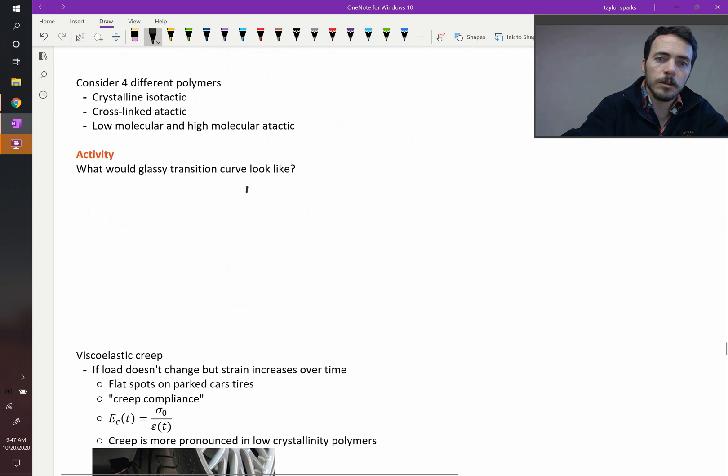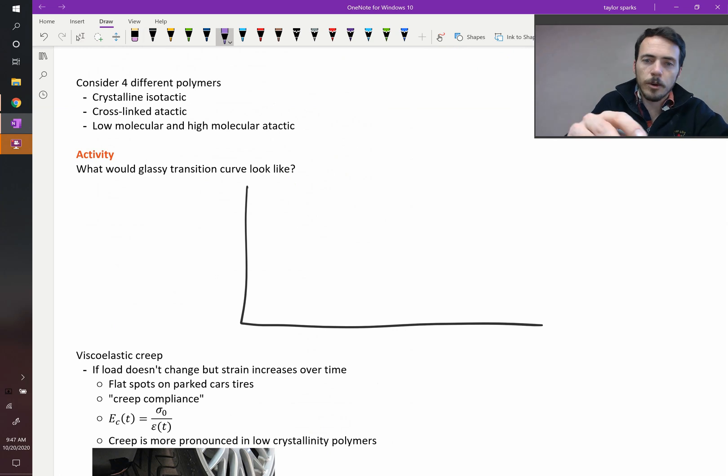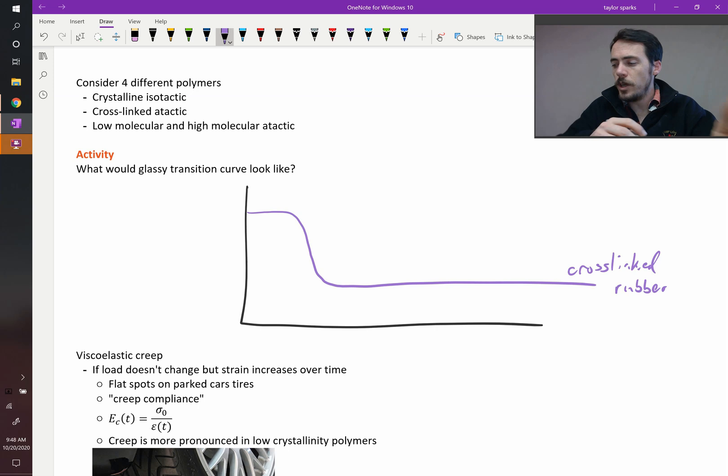What would a cross-linked polymer look like, a cross-linked rubber? Well, a cross-linked rubber, it's going to exhibit a glassy transition temperature, but once it becomes a rubber, it's never going to flow. It's cross-linked. So this would be our cross-linked rubber. If you heat it up, it will just eventually burn, but it won't flow. It doesn't melt like other polymers.